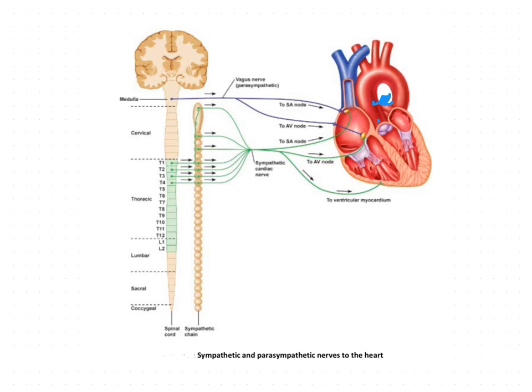The superficial cardiac plexus gives branches to the deep cardiac plexus, to the right coronary artery, and to the left anterior pulmonary plexus — the plexus supplying the lungs. So the superficial cardiac plexus distributes to the deep cardiac plexus, the right coronary artery, and the left anterior pulmonary plexus.